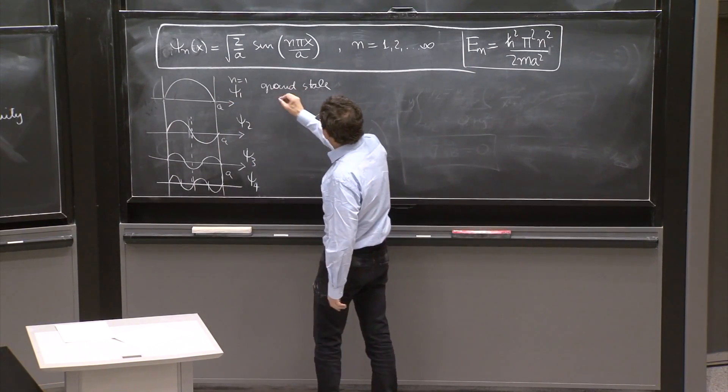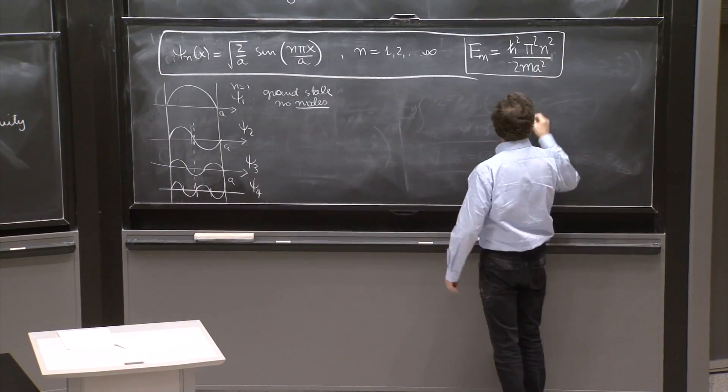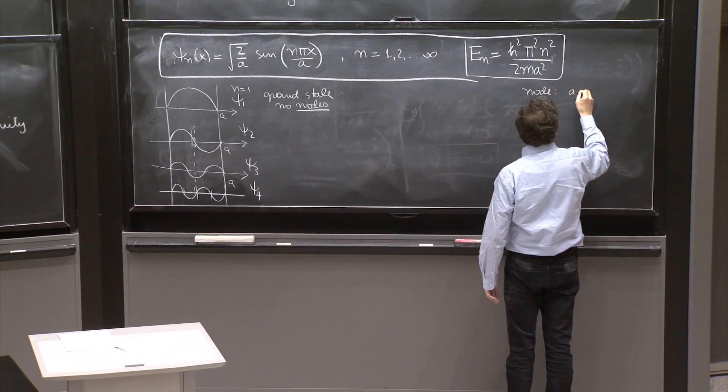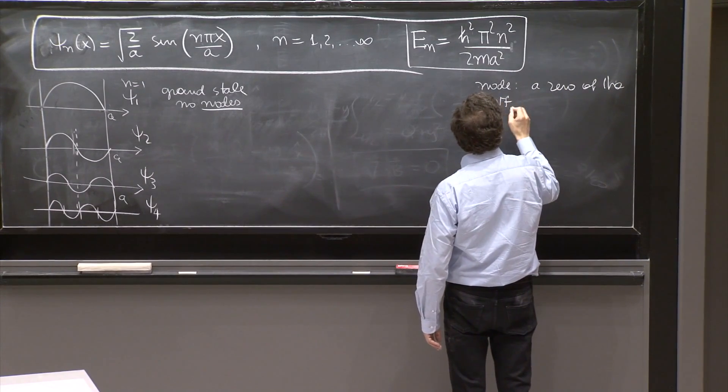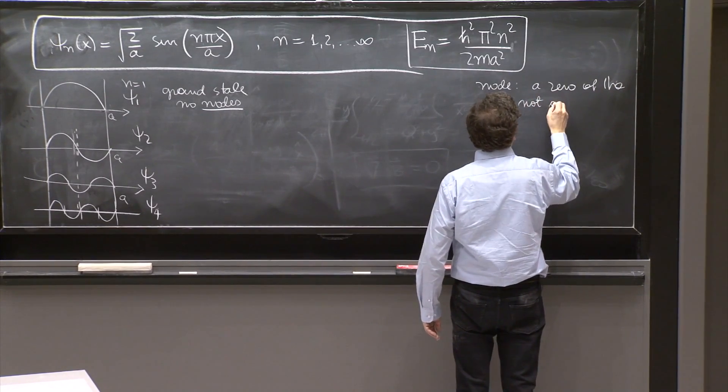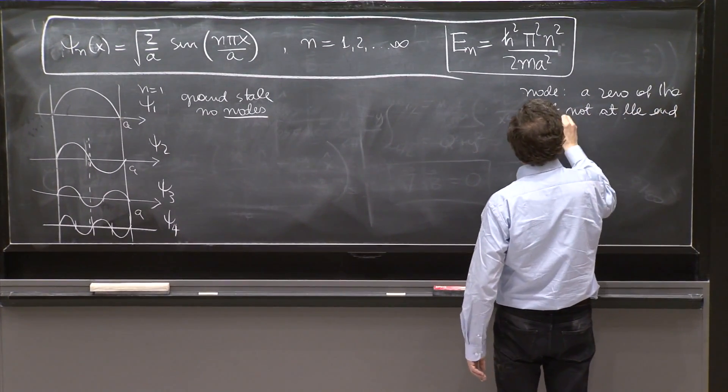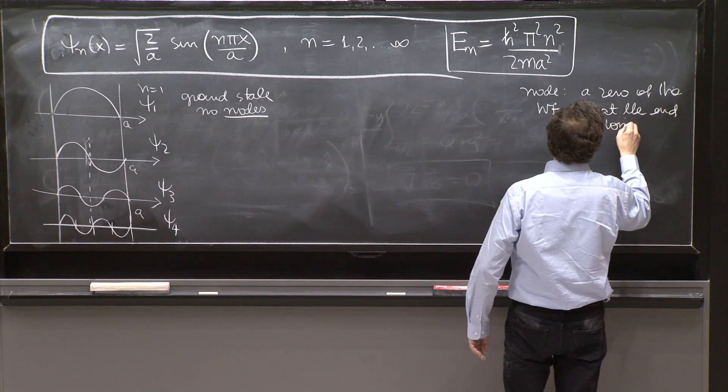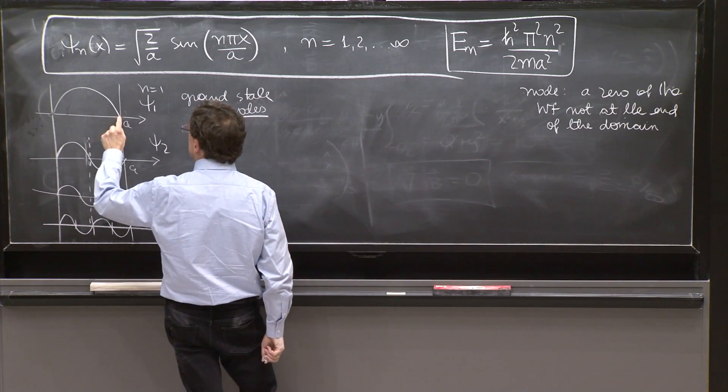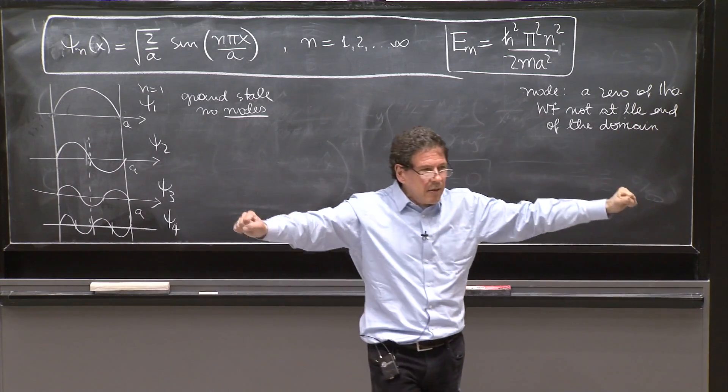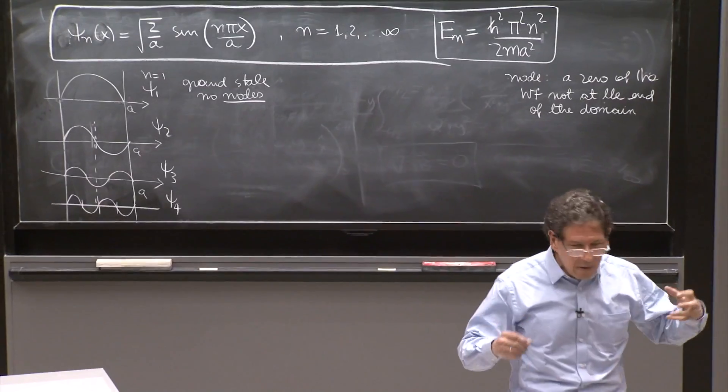And the ground state has no nodes. So a node is a zero of the wave function, not at the end of the domain, end of the domain. Because if we included that, I would have to say that the ground state has two nodes already, because 0 and 0, but the 0 at the end of the domain should not be counted as a node. Nodes are the zeros inside.